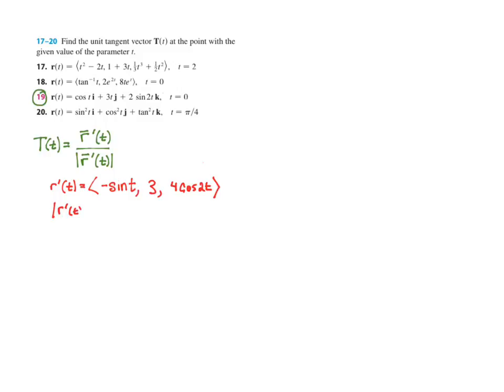So if we take the magnitude of that, remember that is the square root of the components squared and added up. So negative sine t — you square that, you get sine squared of t, the negative cancels out — plus 3 squared, which is 9, plus 4 cosine 2t times itself gives me 16 cosine squared of 2t.